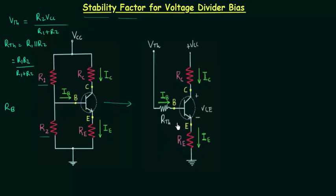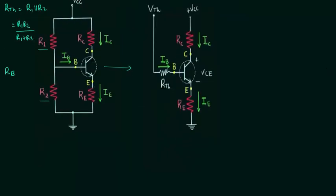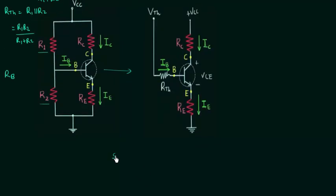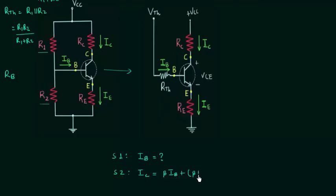Once you have Thevenin's equivalent circuit you can easily find out stability factors. First we will find out the stability factor S. In step one, apply KVL in the input loop and find the expression of current Ib. In step two, find current Ic which is equal to β times Ib plus (β + 1)·Icbo.